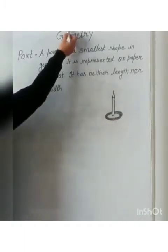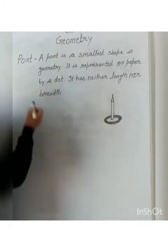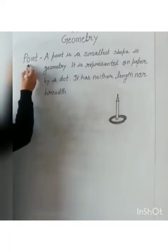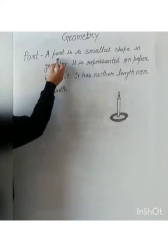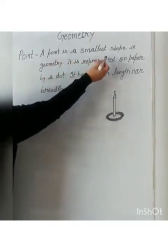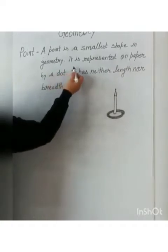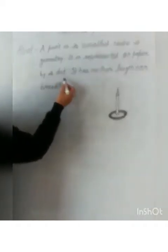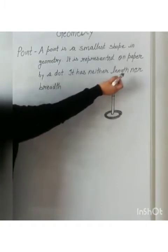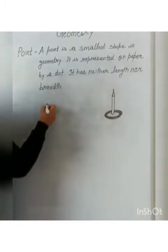Today, we will start new chapter, chapter geometry. First, we will discuss definition of point. A point is the smallest shape in geometry. It is represented on paper by a dot. It has neither length nor breadth.